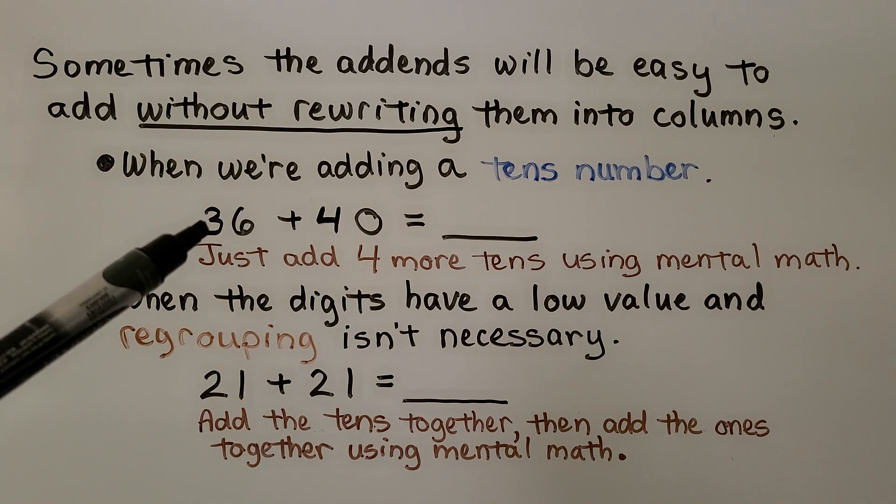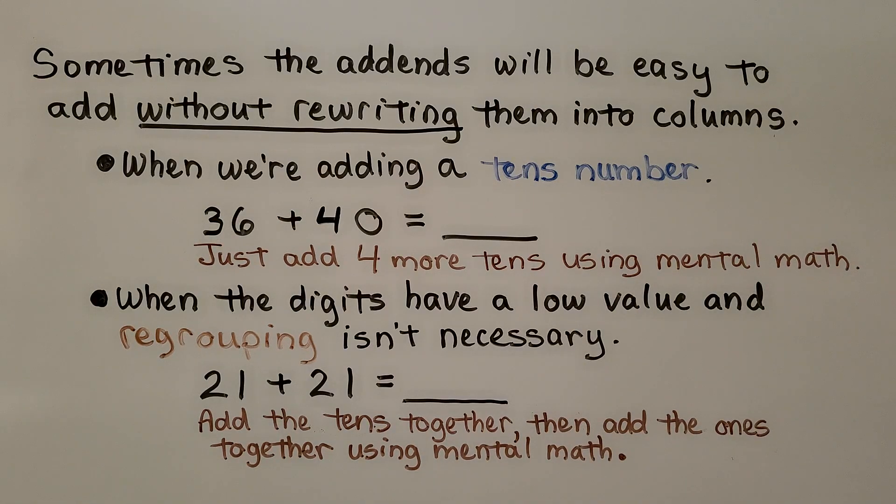4 more tens. That would be 3 plus 4. That would be 7 tens and 6 ones. It's equal to 76.